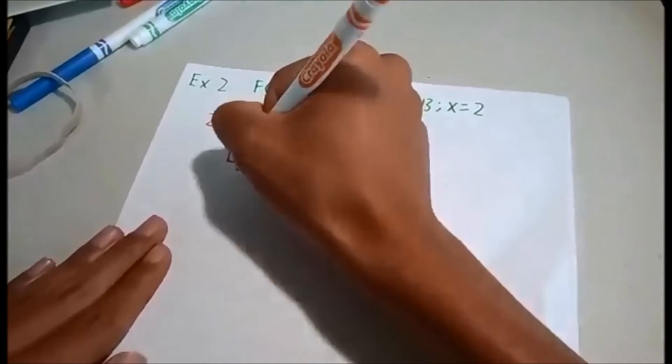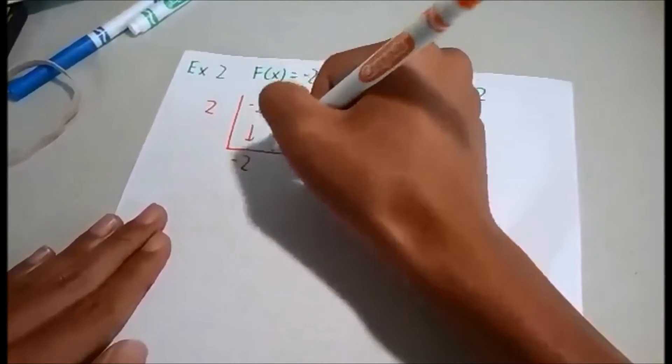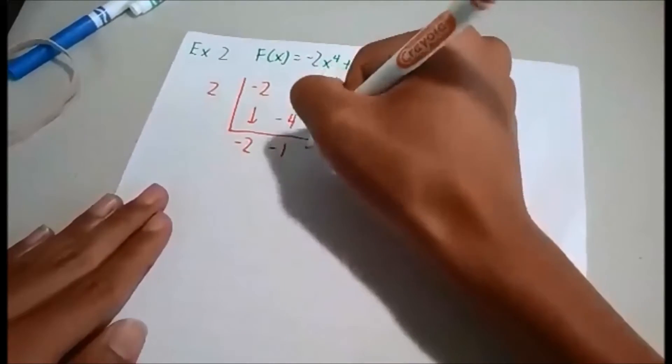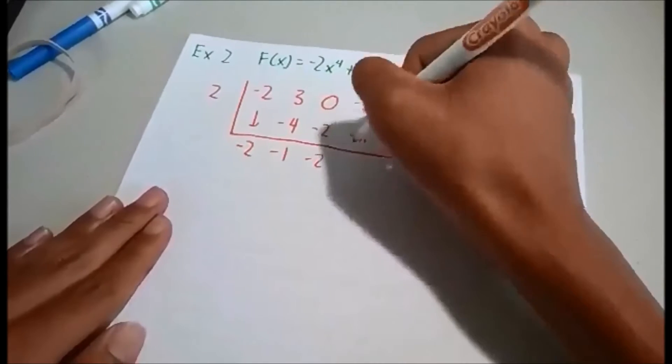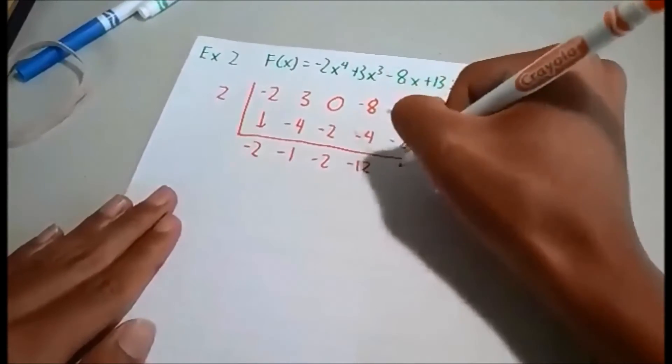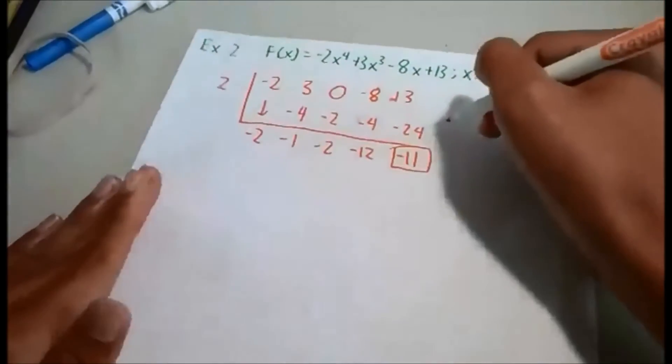So we do the exact same thing as dropping negative 2. This will multiply into negative 4. This will add on to negative 1. Multiply to negative 2. Also negative 2 multiplies into negative 4. We add that, that equals to negative 12. We end off with negative 24. And your final answer is 11. And that's how you do these problems.